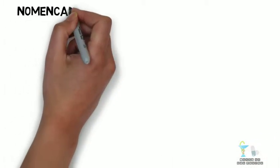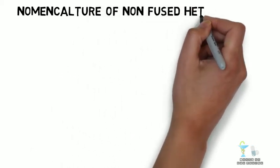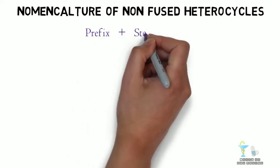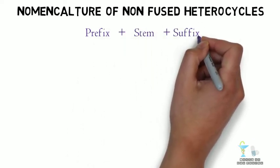Now let us move to the nomenclature of non-fused heterocycles. There are three categories: prefix, stem, and suffix.